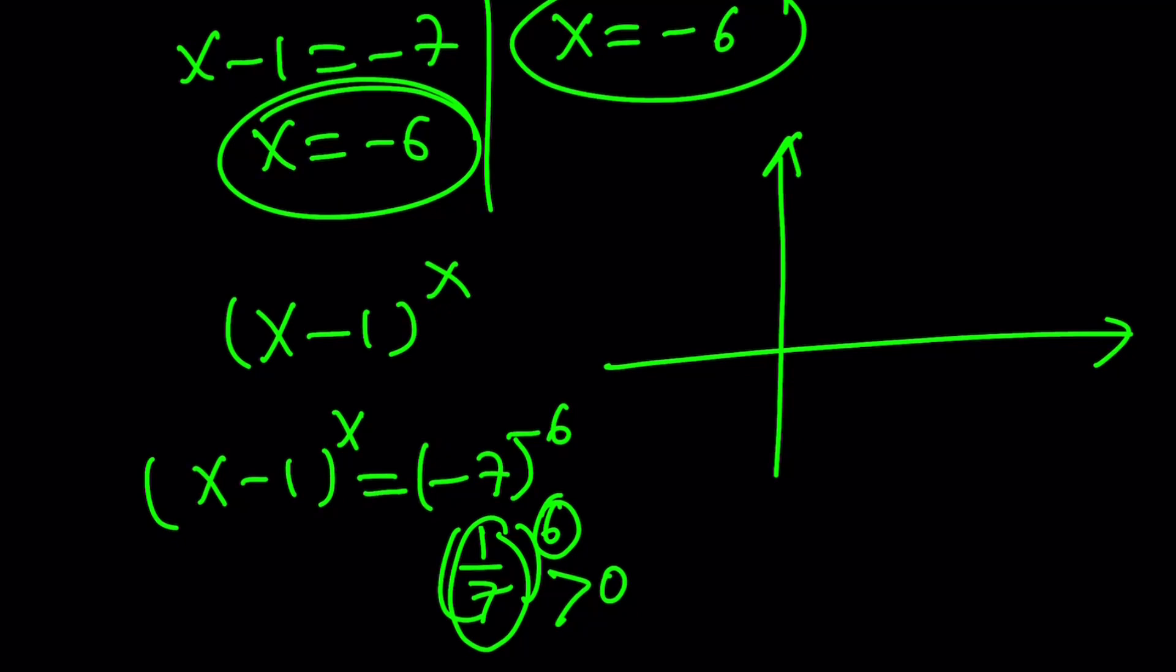Because this graph doesn't go below the x-axis. So it starts at 1. And at 1, it's defined because it starts at 0, 0. Because if x is 1, 0 to the power 1 equals 0. Make sense?